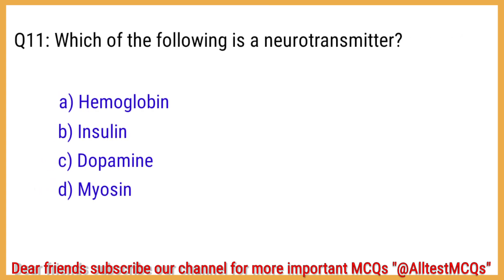Q11. Which of the following is a neurotransmitter? The right answer is option C: Dopamine.